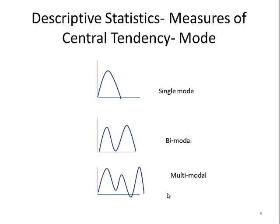These are visual examples of frequency distributions. We could have a sample where there's only one frequently occurring score clustered there at the top, bimodal where you have two values that occur frequently, and multimodal.